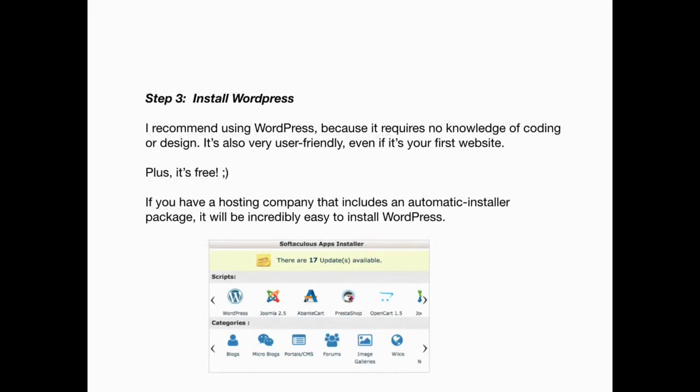Step three: install WordPress. I recommend using WordPress because it requires no knowledge of coding or design. It's also very user-friendly, even if it's your first affiliate website. And it's free. If you have a hosting account that includes an automatic installer package, it will be incredibly easy to install WordPress.